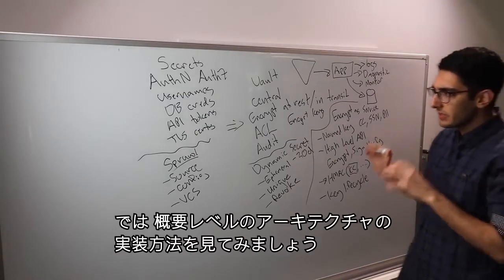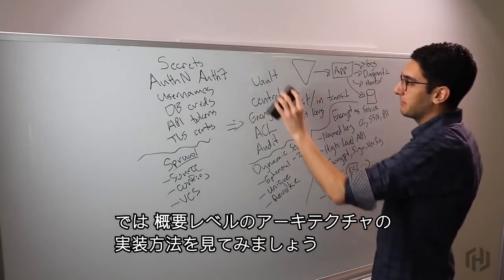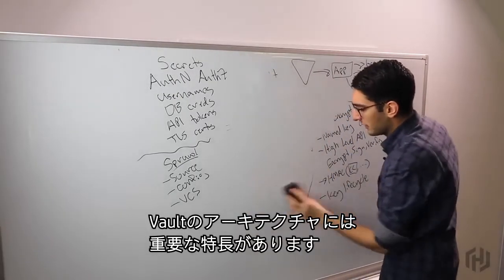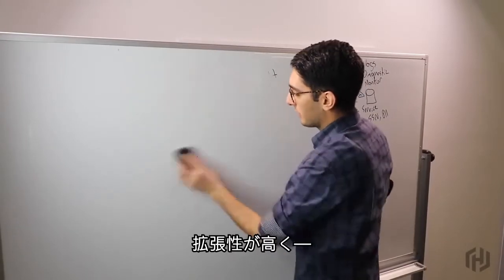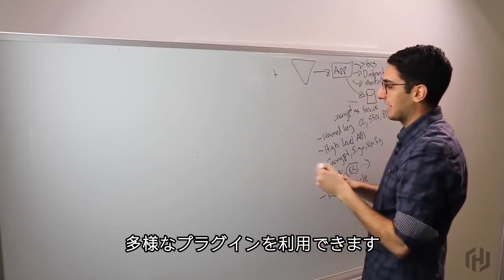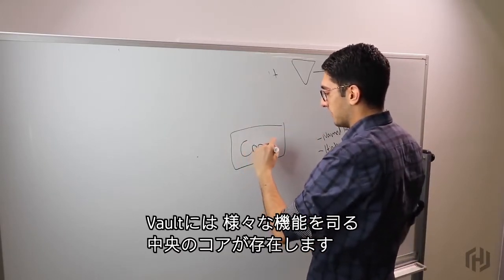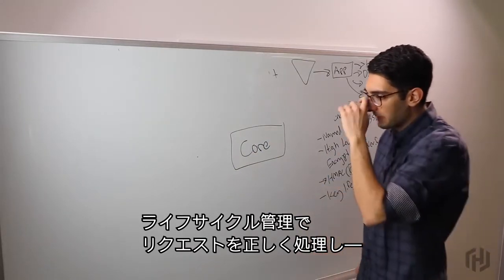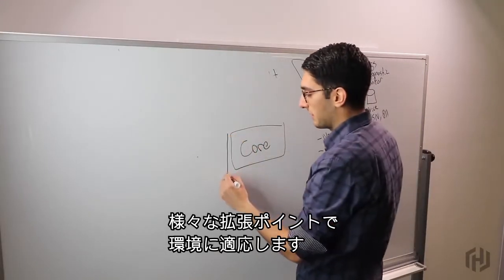Now maybe we'll zoom in quickly and talk a bit about high level architecture of how does this actually get implemented. When we talk about Vault's architecture, there's a few important things to realize. One is that Vault is highly pluggable. It has many different plug-in mechanisms. When we talk about Vault, it has the central core, which has many responsibilities, including the lifecycle management, ensuring requests are processed correctly. And then there's many different extension points that allow us to fit it into our environment.